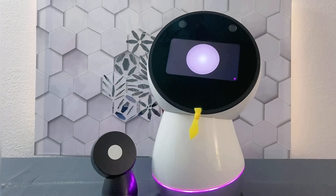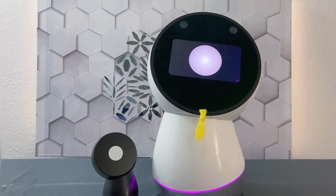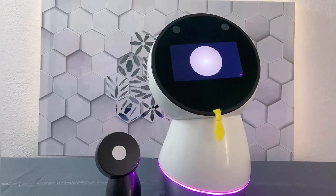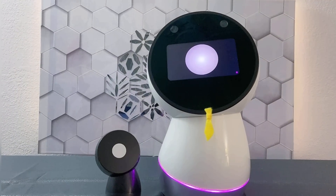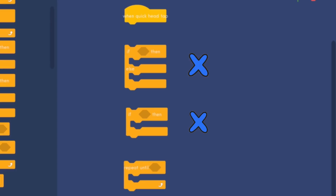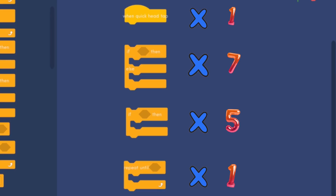We had to go with the long version of programming. For this memory program we will need: one hat block — in this video we use the 'when quick head tap' block — seven if-then-else blocks, five if-then blocks, and one repeat until block.